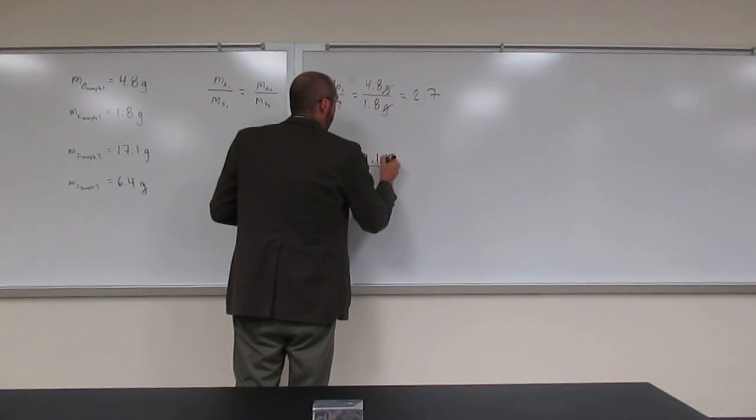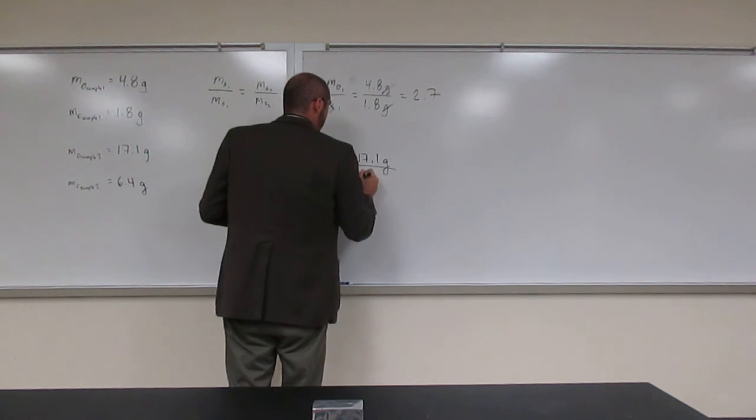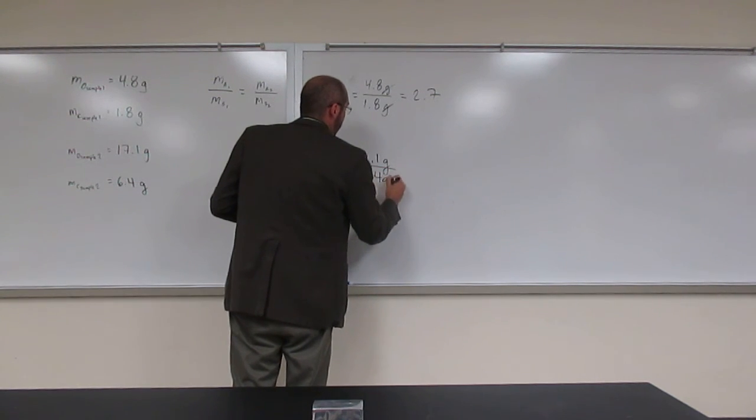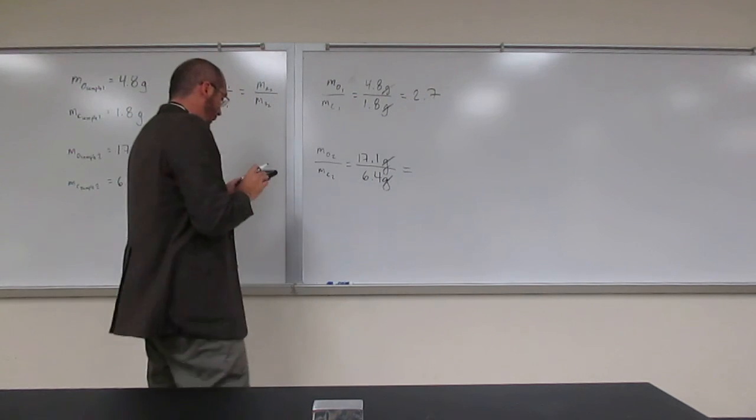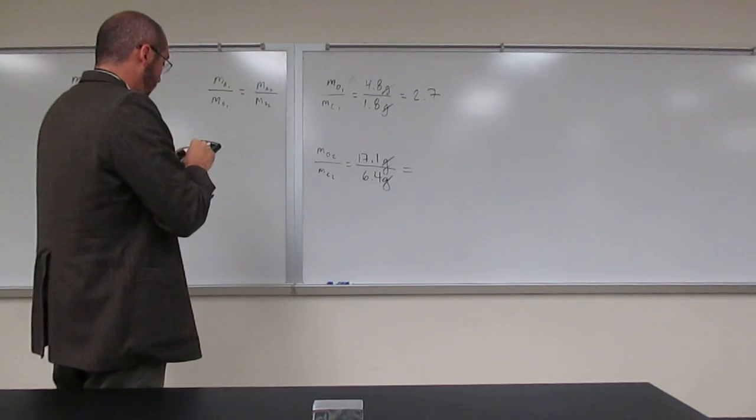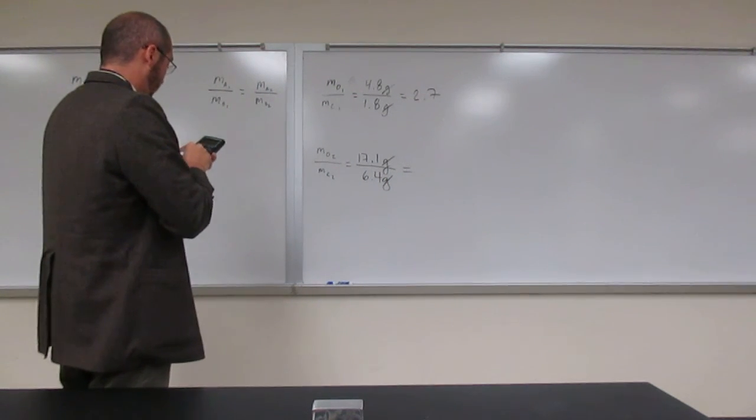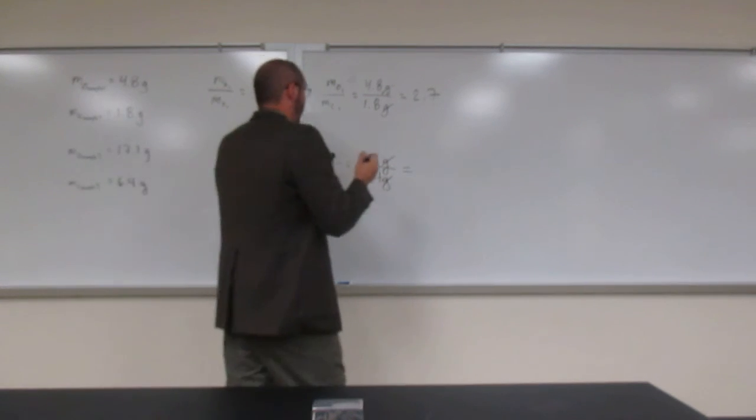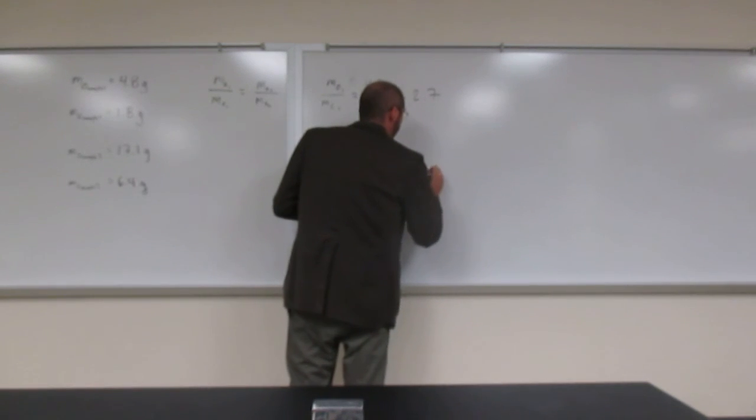That's going to be 17.1 grams divided by 6.4 grams. 17.1 divided by 6.4 equals 2.7.